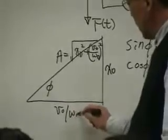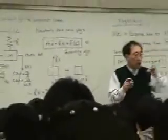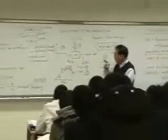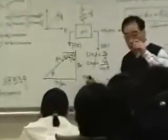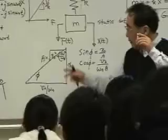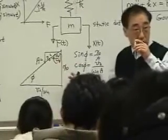V0 over omega n. This again confirms what we observed physically. If there is no displacement, if x0 is 0, then I have the base is 0, because x0 is 0.